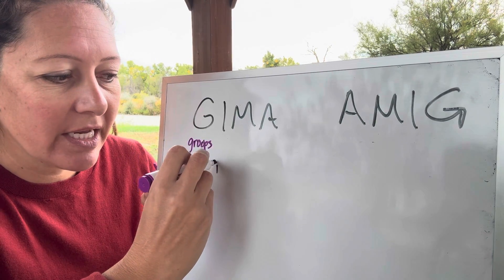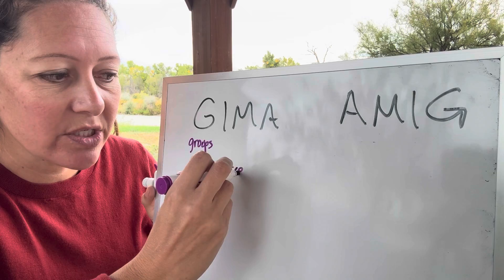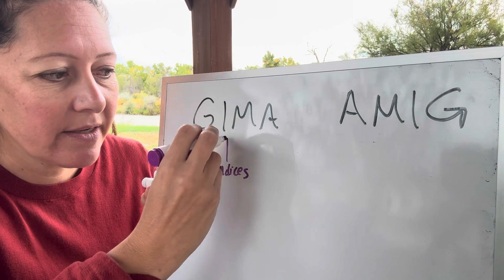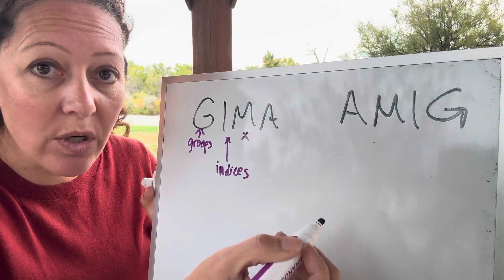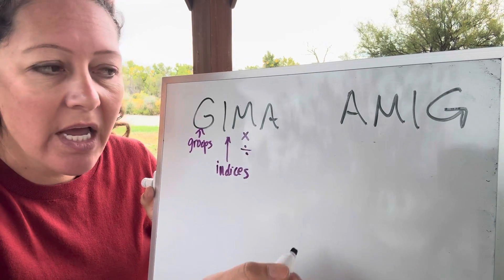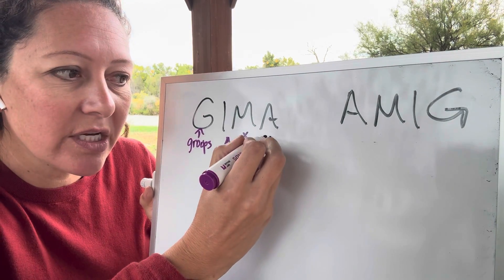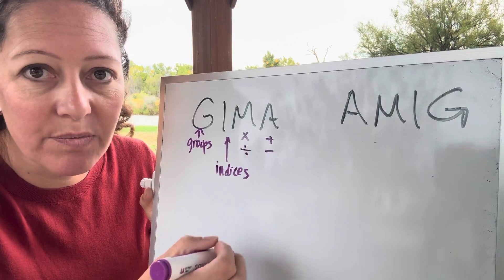I stands for index or indices, which is just the plural of index. M is multiplication or its inverse, which would be division. And A is for addition or its inverse, which would be subtraction.